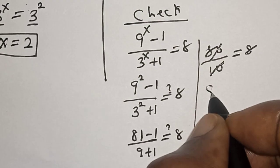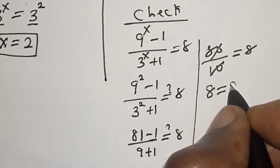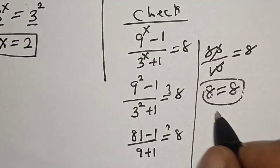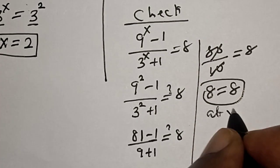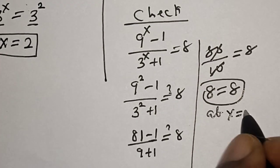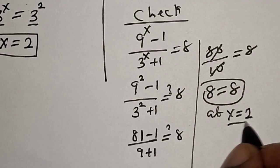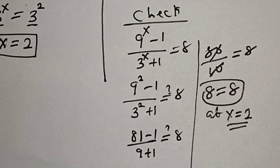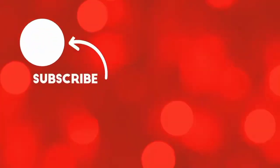We have 81 minus 1, that is 80, over 9 plus 1 which is 10. This simplifies to 8. Therefore, the left-hand side 8 is equal to the right-hand side 8. We satisfy the given equation at x equal to 2. If you enjoyed this class, please don't forget to like, share, comment and subscribe. Thank you.